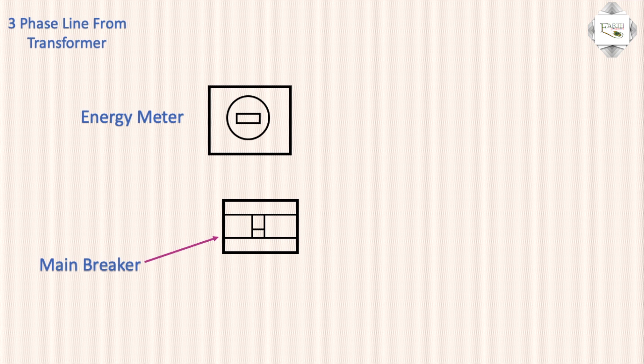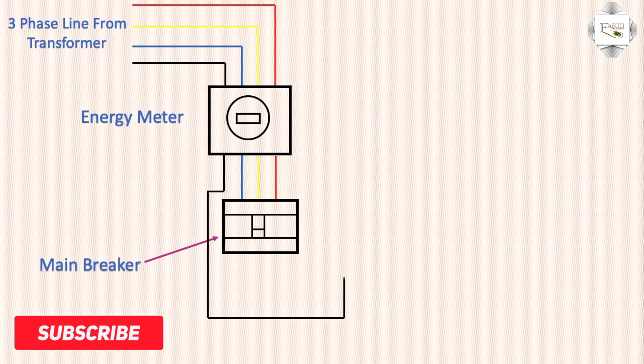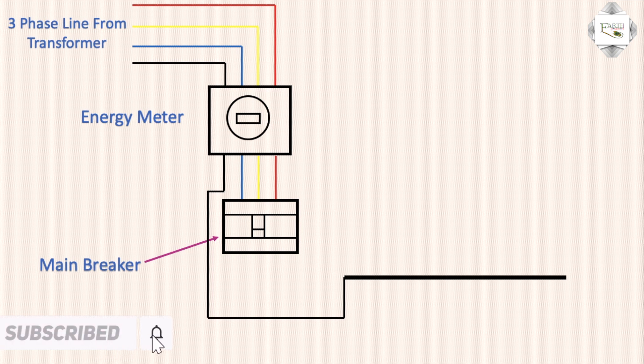The three-phase line from the transformer goes to the energy meter. The energy meter output then connects to the MCCB circuit breaker, using a connection with the neutral electric bar.